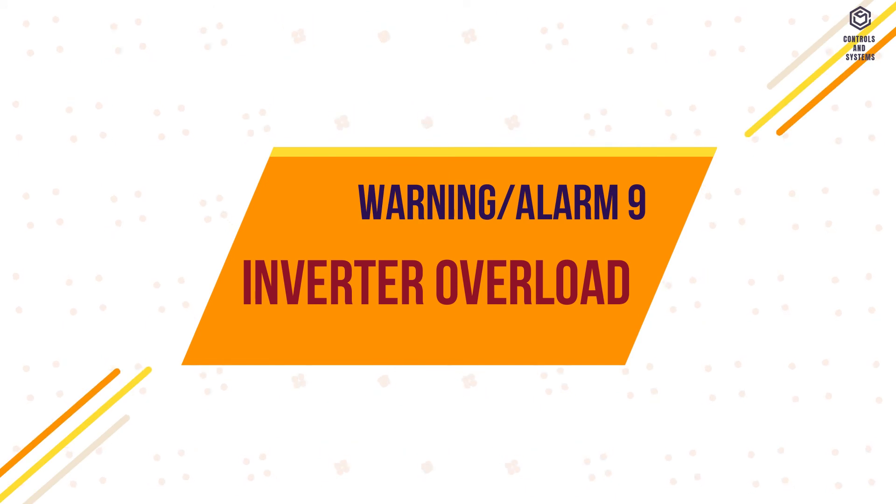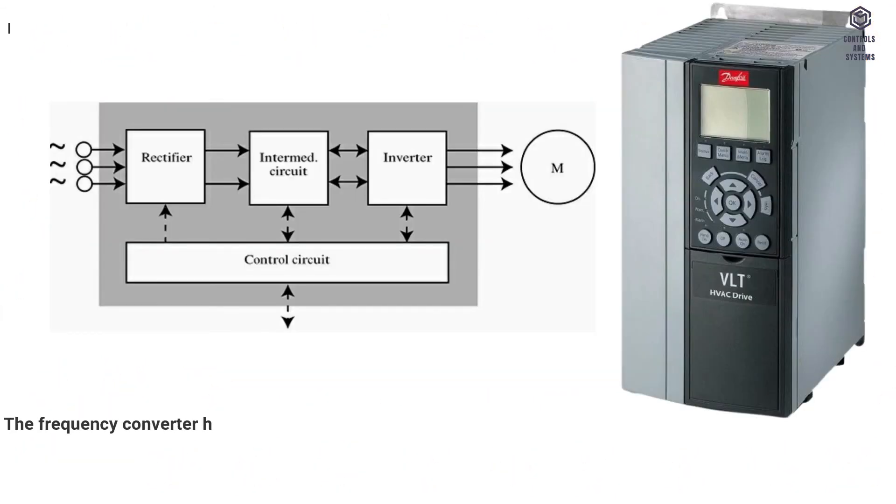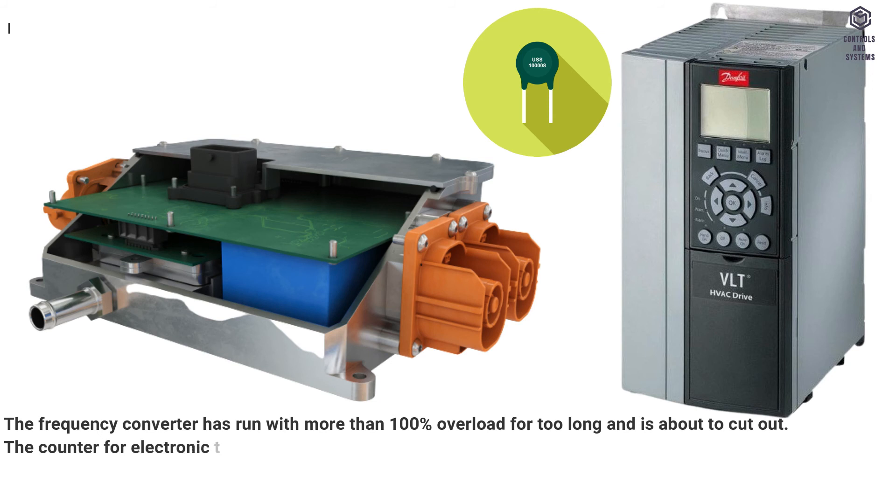Warning, Alarm 9, Inverter Overload. The frequency converter has run with more than 100% overload for too long and is about to cut out. The counter for electronic thermal inverter protection issues a warning at 98% and trips at 100% with an alarm.